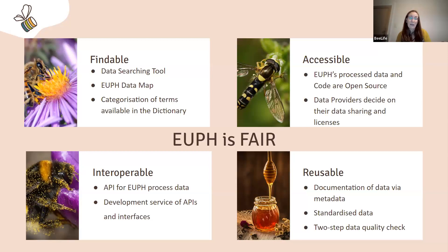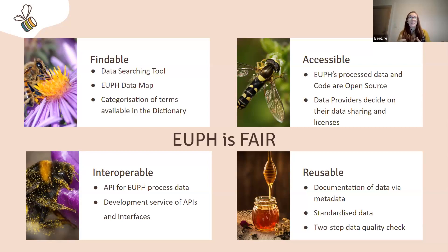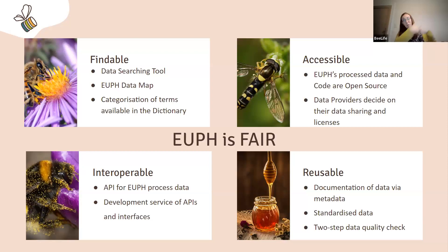How are we making it Interoperable? We have an API — an application programming interface — that allows the data in the platform to be exchanged with whatever other platform is out there for the processed data. We also have a development service for APIs and interfaces, because in many occasions the hub is also connecting with other servers via APIs so that there is a permanent flow of data — from platforms to the hub and from the hub to platforms.